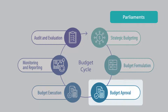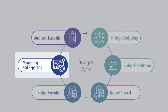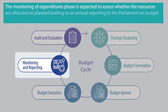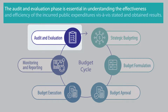Budgets are then approved by parliaments in the form of an annual budget law during the budget approval phase. This is followed by budget execution, when expenditures are incurred to undertake activities and deliver on expected results. The monitoring of expenditures phase assesses whether the resources are allocated as planned, leading to an annual reporting to parliament on budget implementation. The audit and evaluation phase is essential in understanding the effectiveness and efficiency of the incurred public expenditures vis-à-vis stated and obtained results.